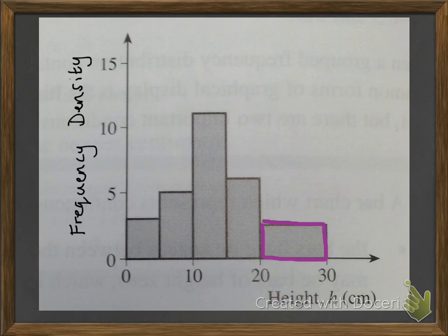So here's one where they've made the two intervals at the end. They were originally two, they've combined them into one, so we have that class width of 10 instead of 5 like the others.